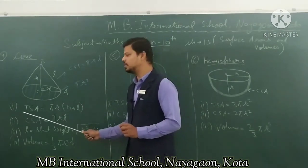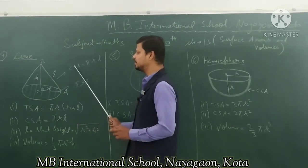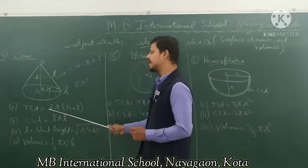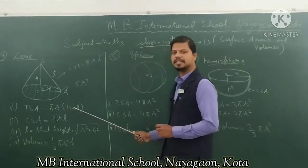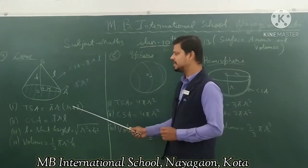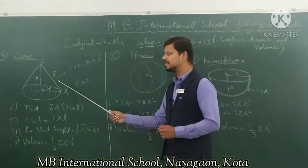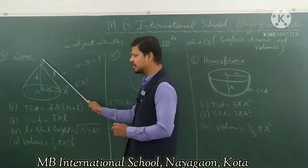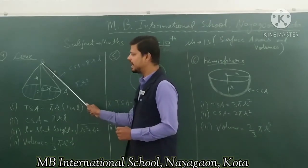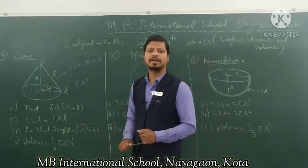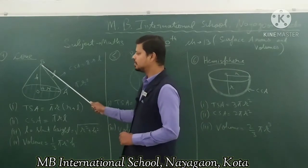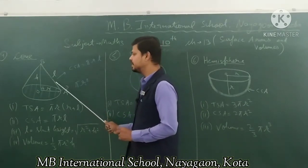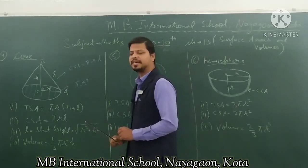First of all we find the total surface area. Total surface area of a cone is pi r bracket r plus l. Here r is the radius and l is the slant height — slant height means the slanting height. And h is the height of the cone.